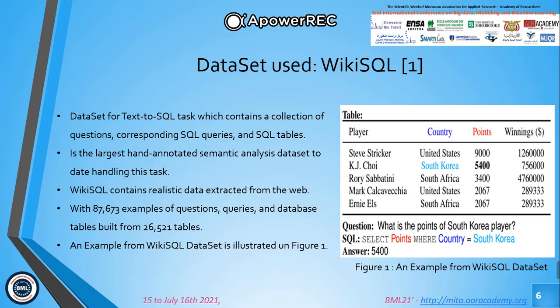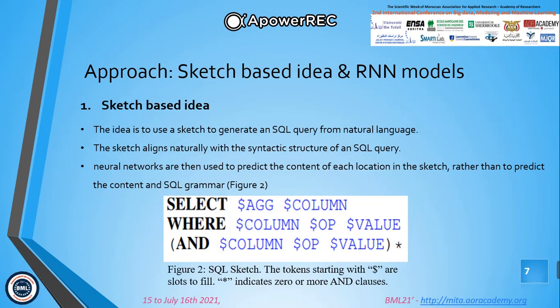We used the WikiSQL dataset to train and evaluate our models. The idea is to use a sketch to generate an SQL query from natural language, and then neural networks are used to predict the content of each slot in the sketch, rather than predicting the full SQL grammar.